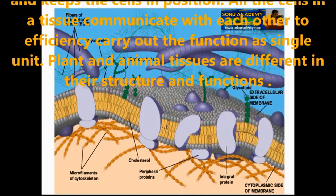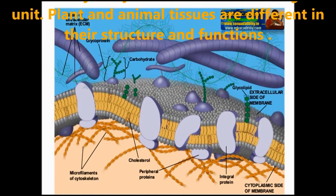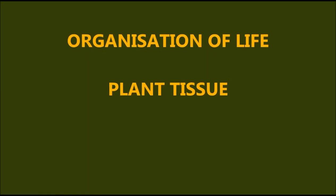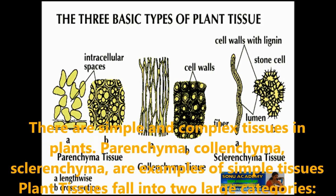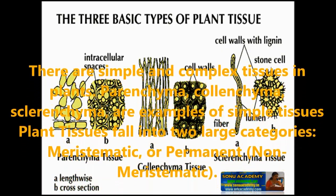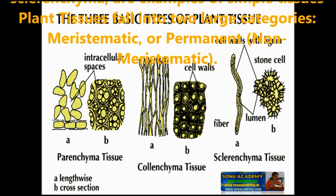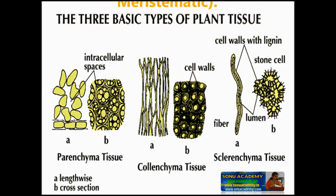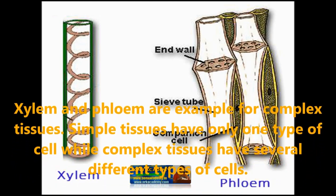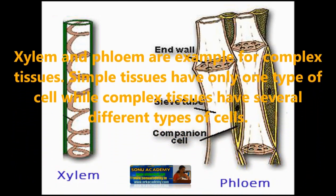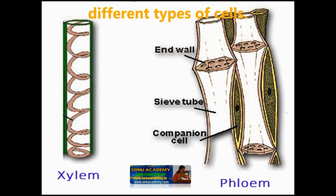Plant and animal tissues are different in structure and functions. Let us study more about the plant and animal tissues. There are simple and complex tissues in plants. Parenchyma, collenchyma, and sclerenchyma are examples of simple tissues, while xylem and phloem are examples of complex tissues. Simple tissues have only one type of cell while complex tissues have several different types of cells.